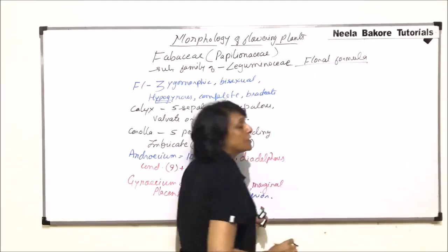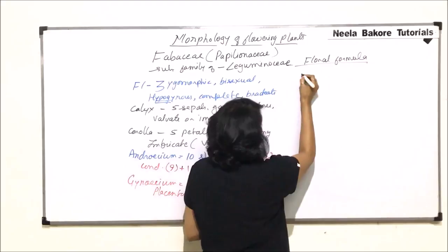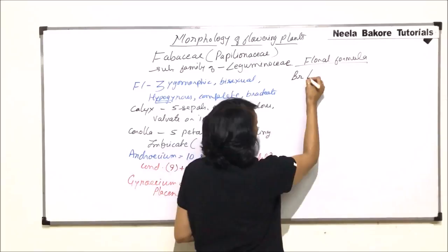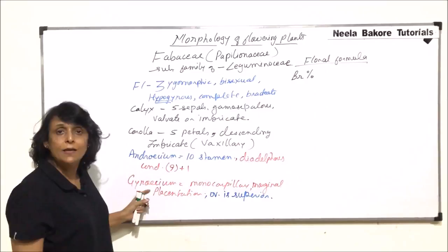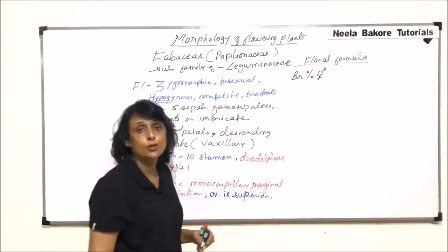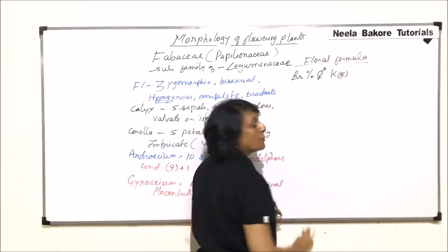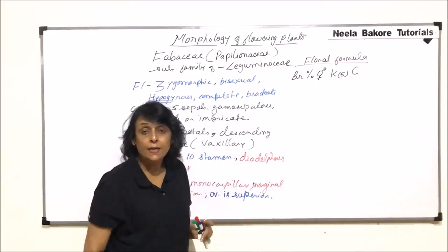And floral formula is very very important in case of this particular family. Flower is bracteate, so we write BR. It is zygomorphic. And there are both the whorls which are there, that is androecium and gynoecium, so it has to be bisexual. Now coming to the whorls. Calyx, 5. And they are fused, so we put this 5 in bracket.